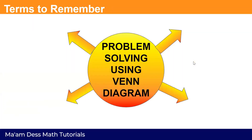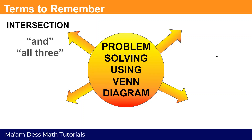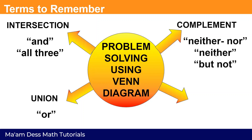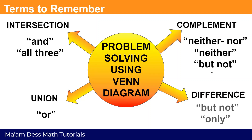There are terms to remember in solving word problems involving Venn diagrams. First, for the intersection, we have the word 'and' and 'all three.' Next, for union, the word is 'or.' For complement, we have 'neither nor' and 'neither.' And for difference, we have the words 'but not' and 'only.'